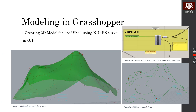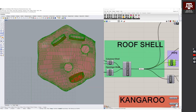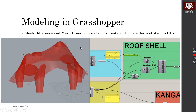The next step is to create a 3D model for the roof shell using NURBS curves. We can change the control points of these curves and the shape of the shell will change. This is the result — I used mesh difference and mesh union to create this final result.